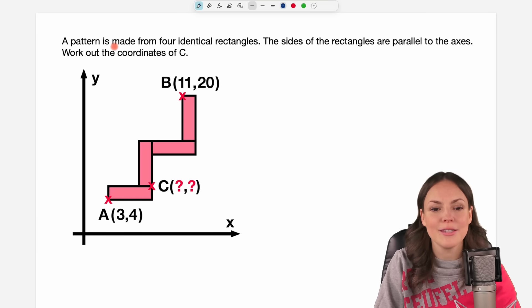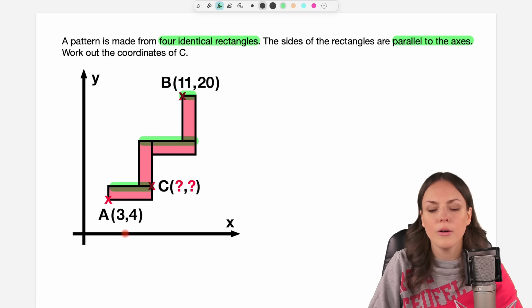A pattern is made from four identical rectangles. We can see the rectangles here, here, here and here. The sides of the rectangles are parallel to the axis. So these sides here and here are all parallel to the y-axis and this side here and these here and here are all parallel to the x-axis.